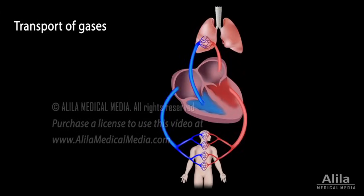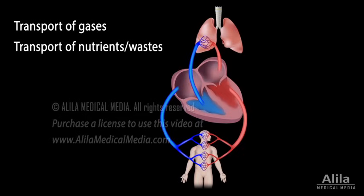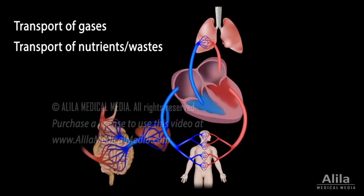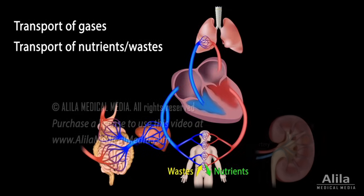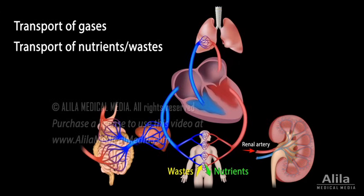Apart from transporting gases, the blood also supplies the body's tissues with nutrients and removes metabolic wastes. It receives nutrients from the digestive system, where digested substances are absorbed through the walls of the small intestine into the bloodstream. These substances are then passed through the liver to be screened for toxins before joining the general circulation. In tissues, nutrients are exchanged for wastes. Wastes are then filtered from the blood in the kidneys and removed in urine.